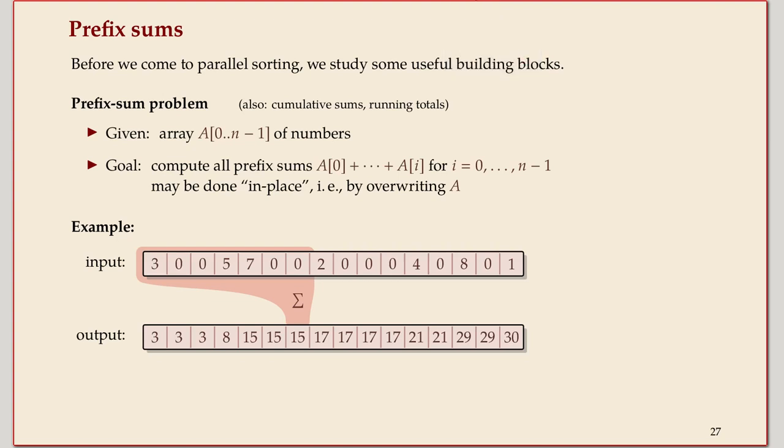We talked about prefix sums last time. I just defined the problem and asked how you would solve it sequentially. But to briefly bring it back on the same page, the definition of the problem is as follows. You are given an array of integers, like this one. And then the output should be, for every position in the output, you sum up everything that's to the left of that position in the original array, including the current position.